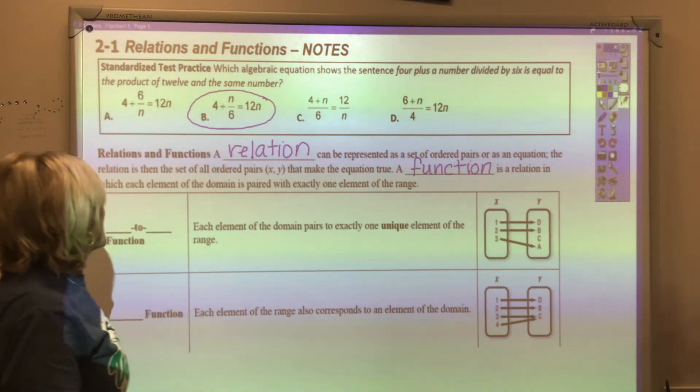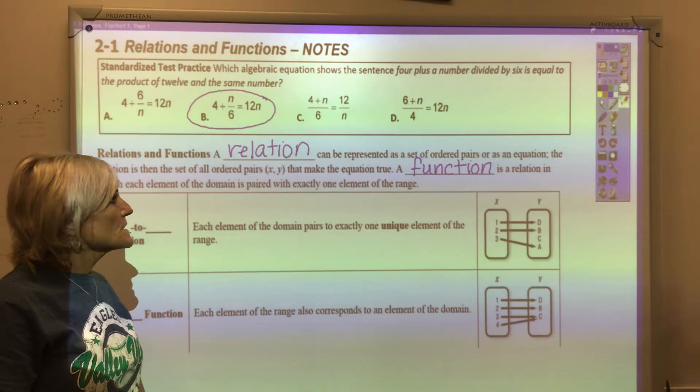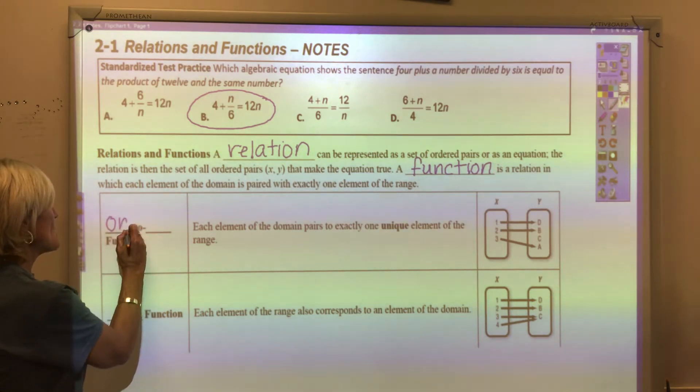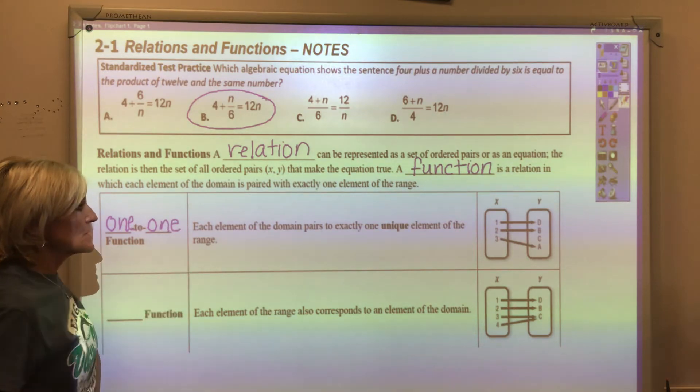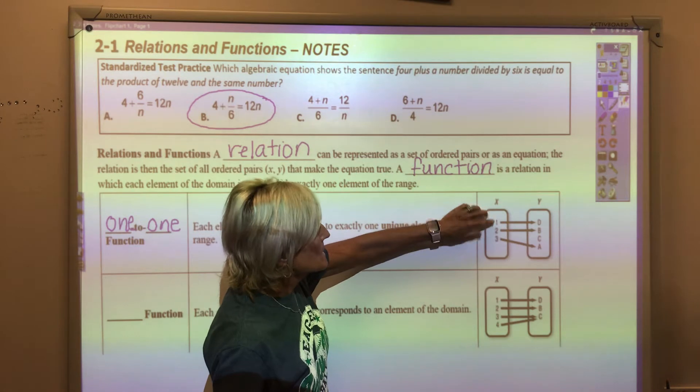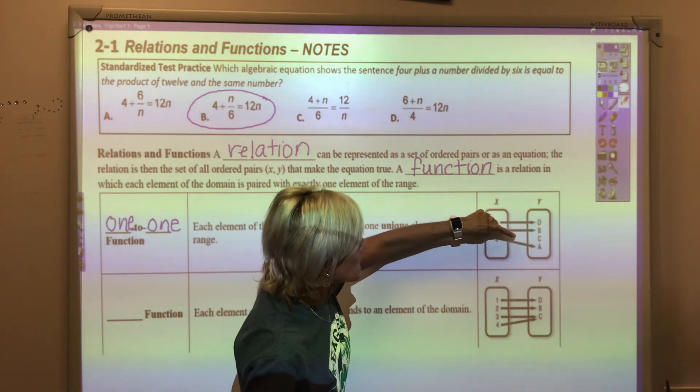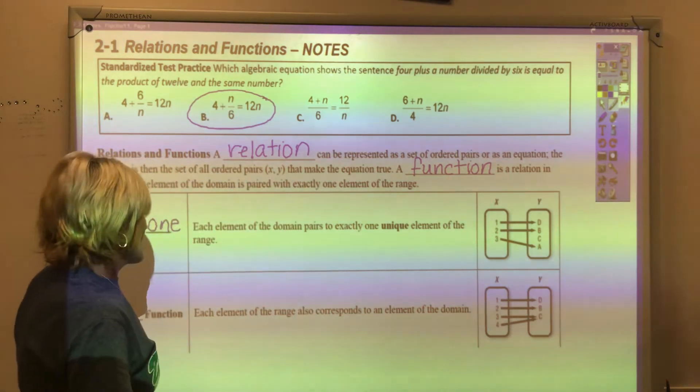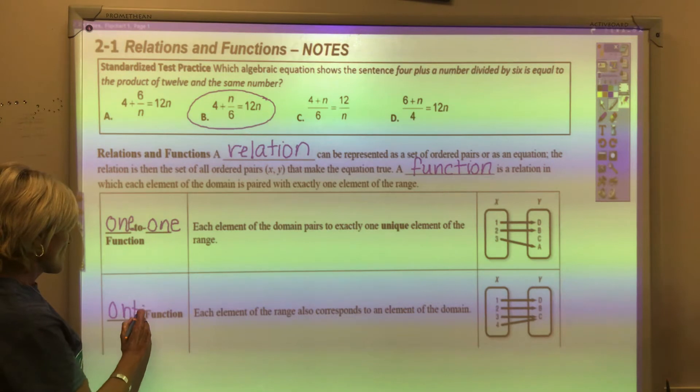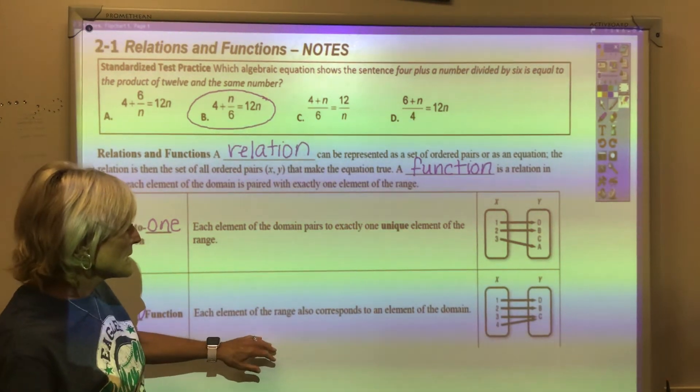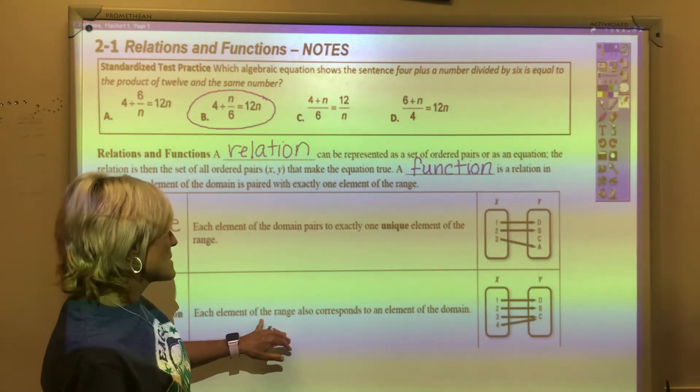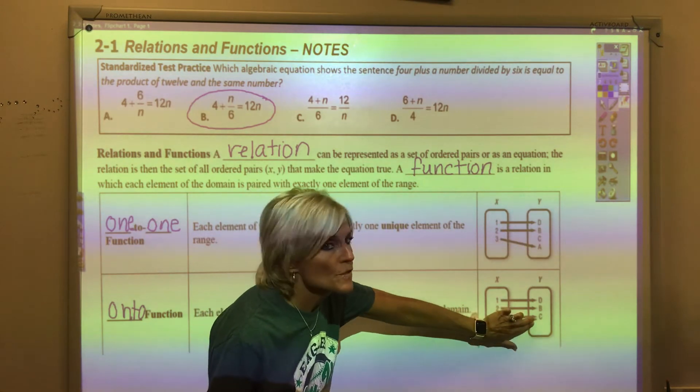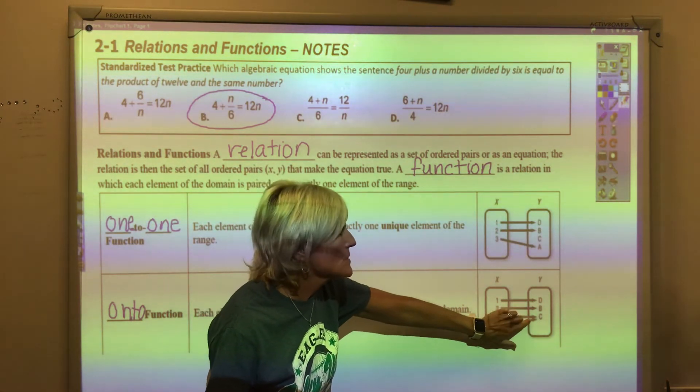A function is a relation in which each element of the domain is paired with exactly one element of the range. For example, a 1 to 1 function is when each element in the domain is paired to exactly one element in the range. So each one of the x's is only going to a single y. An onto function is when each element of the range corresponds to an element of the domain. An easier way to say this would be that two x's go onto one y.